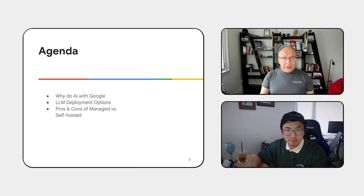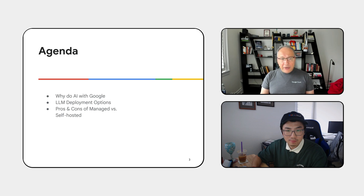Hello, everybody. We want to use AI models. Where should we host them? What choices do we have? Today, we want to touch upon three things: why do AI with Google, what are our deployment options for large language models, and then we want to compare a managed versus a self-hosted solution, each one with its pros and cons.